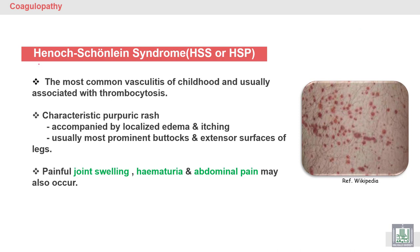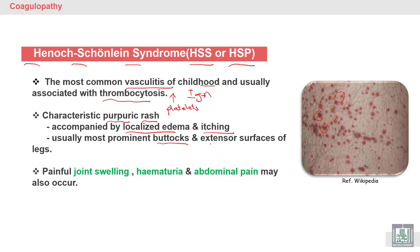Henoch-Schönlein syndrome (HSP) or Henoch-Schönlein purpura is the most common vasculitis. It involves IgA attacking the blood vessels of children, associated with thrombocytosis — meaning increased platelets in peripheral blood — leading to purpura rash or purpura spots under the skin, causing itching and sometimes localized edema. The prominent sites are the buttocks and extensor surface of the legs.